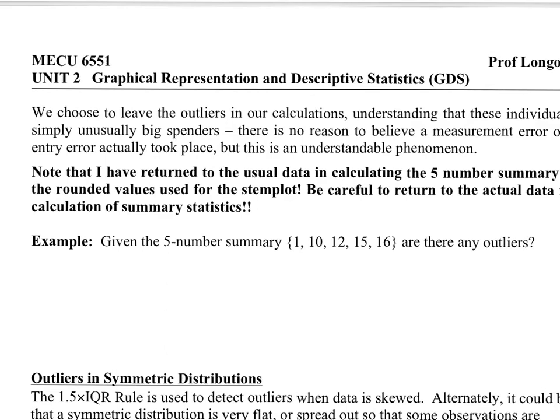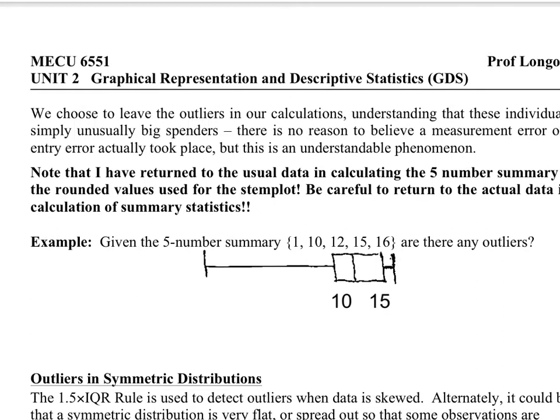Now let's check for outliers in this distribution. Here's a five-number summary. Let's depict the five-number summary as a boxplot. Here's a rough sketch of the boxplot.